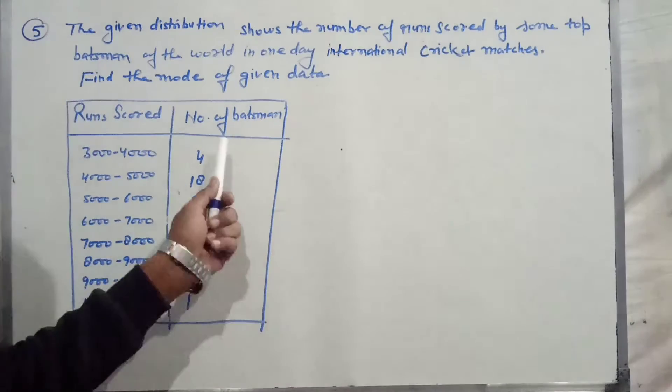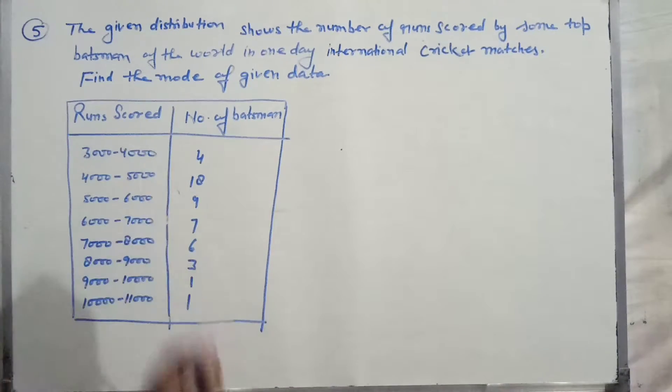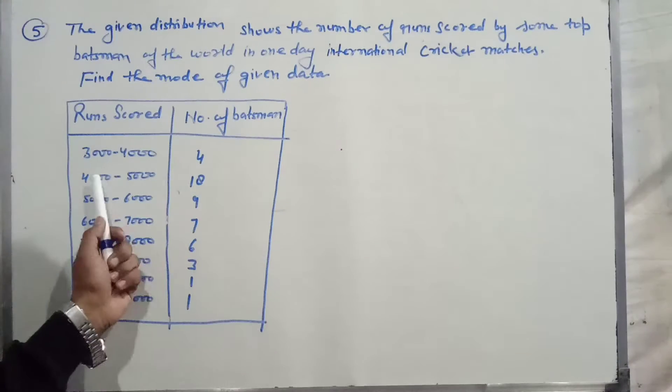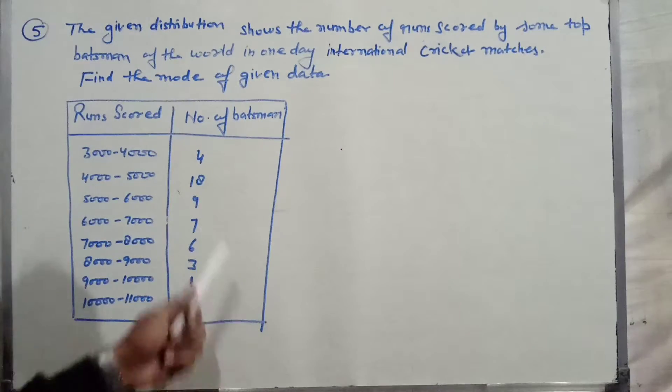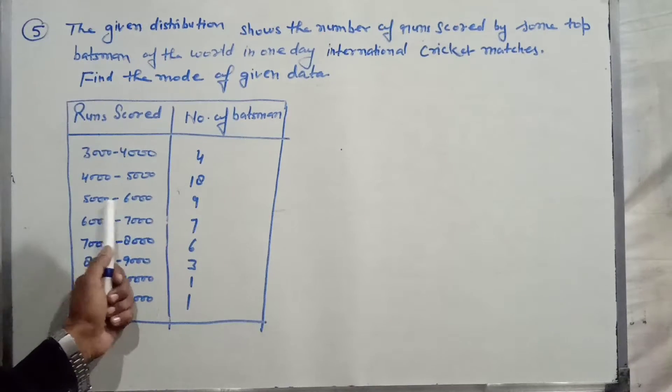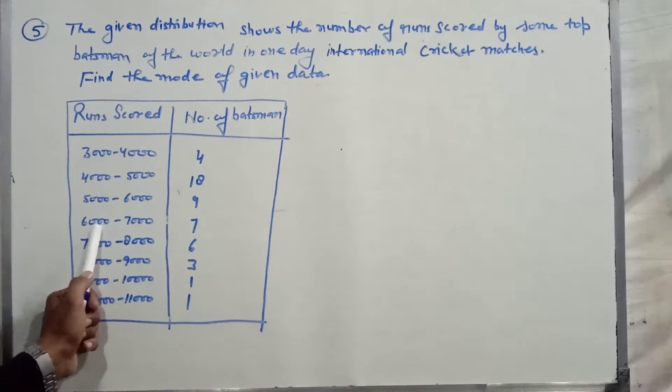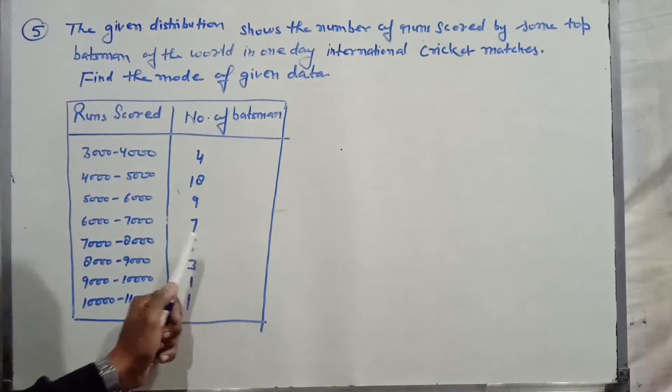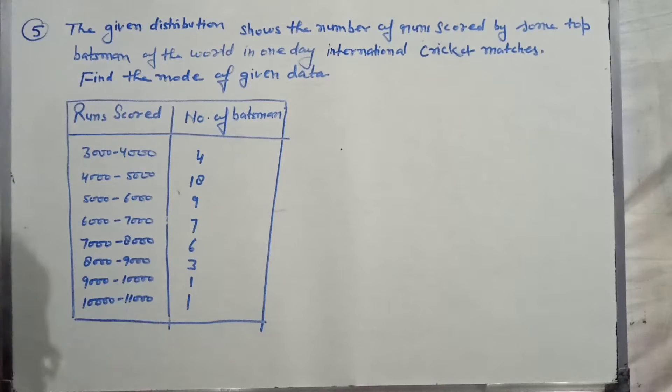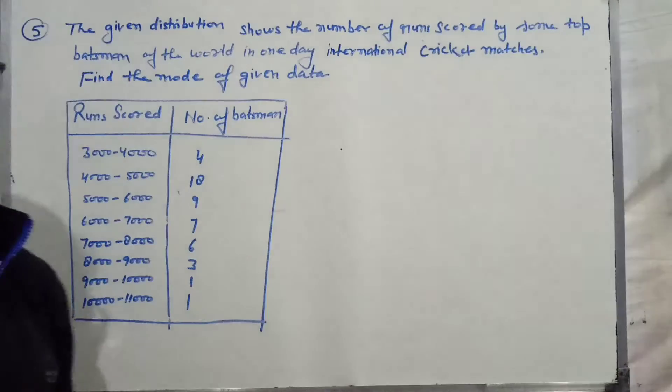The data: 4 batsmen scored 3,000-4,000 runs, 18 batsmen 4,000-5,000, 9 batsmen 5,000-6,000, 7 batsmen 6,000-7,000, 6 batsmen 7,000-8,000, 3 batsmen 8,000-9,000, 1 batsman 9,000-10,000, and 1 batsman 10,000-11,000.